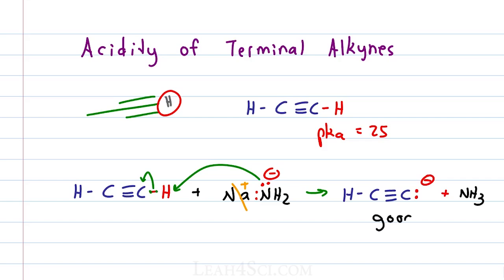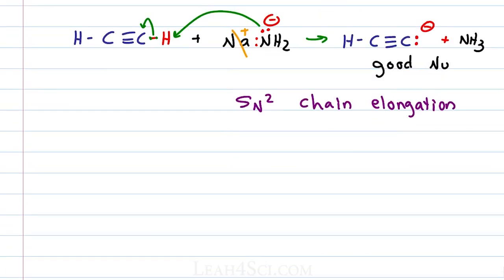The acetylide is a good nucleophile and a key to your retrosynthesis arsenal because you can now use this for SN2 reactions and chain elongation. What else can we do with alkynes? Let's do a quick run through and then we'll go into the individual reactions in the upcoming videos.